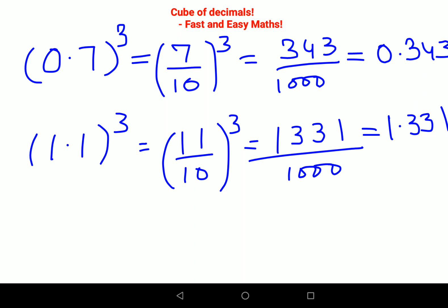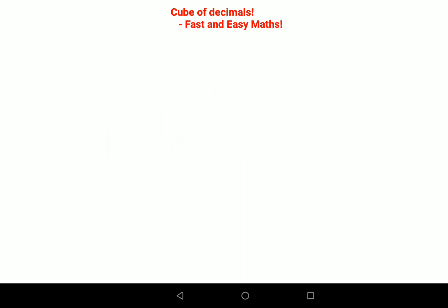Now you must be wondering what happens if there is a bigger number. Let's take for example 2.4, the whole raised to 3. Here again we have 24 upon 10, the whole raised to 3. First we'll find 24 cube and whatever is the answer we'll have to divide it by 1000.